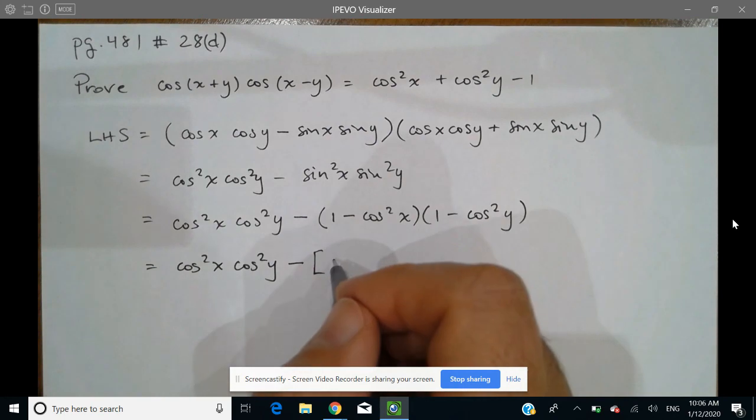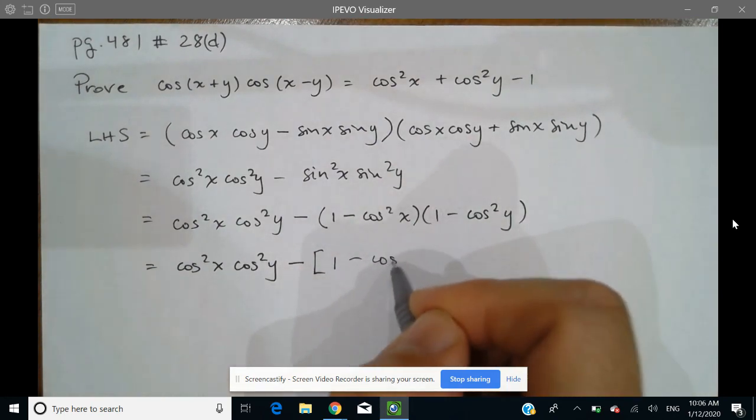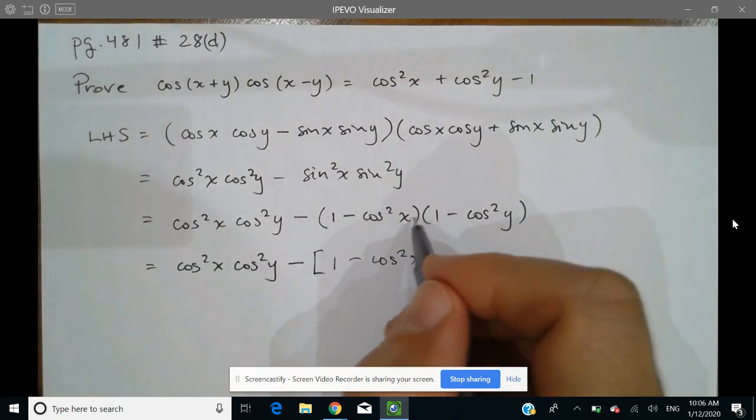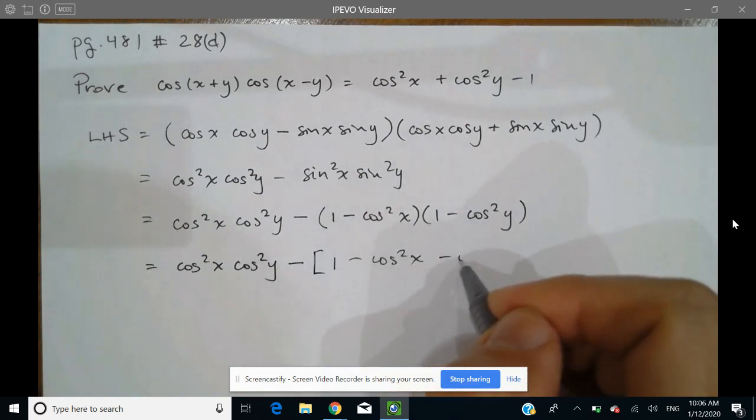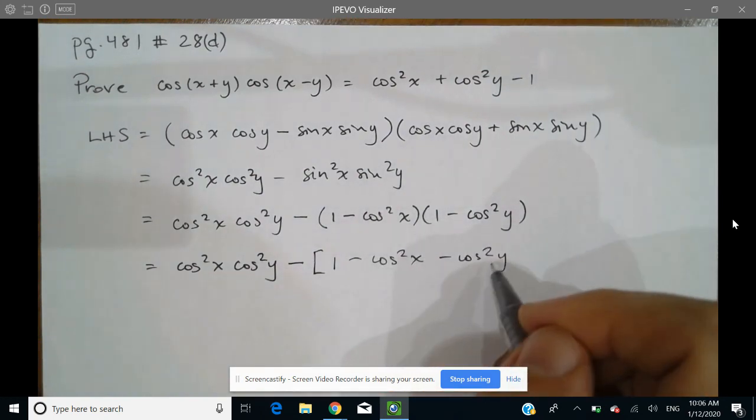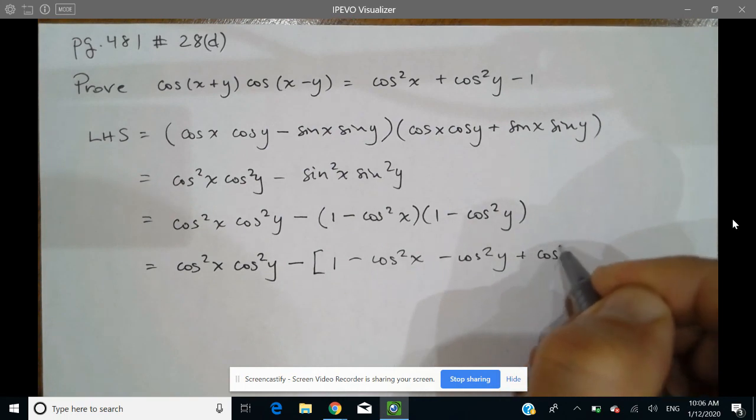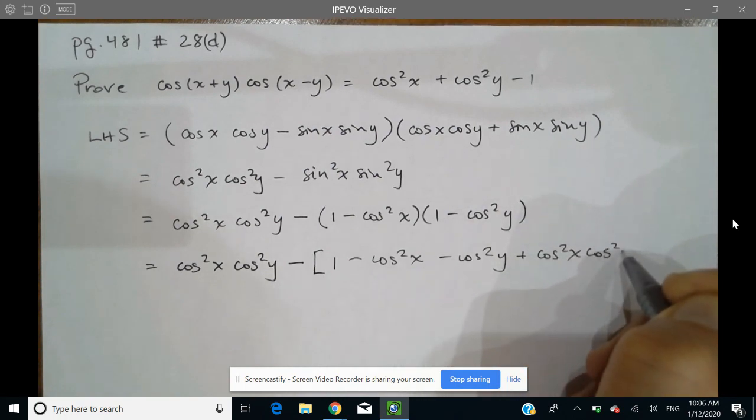So let's multiply these two. So we have 1, and then we've got minus cos squared x and then we've got minus cos squared y. And then lastly, we've got plus cos squared x, cos squared y.